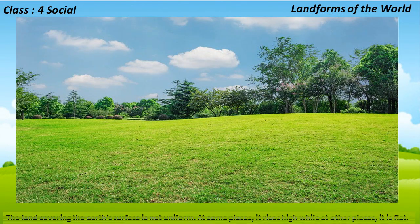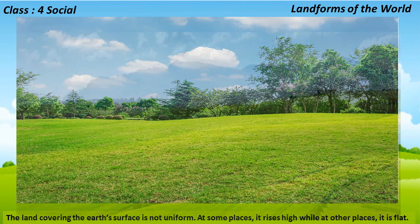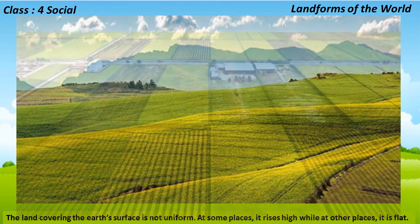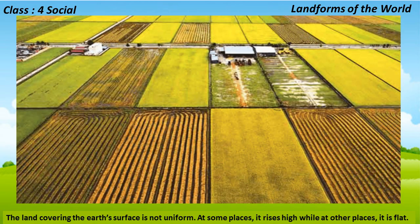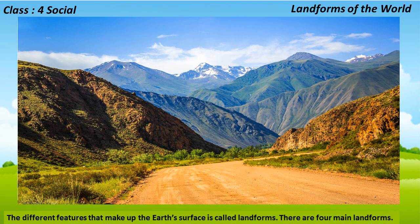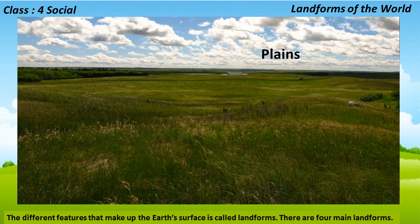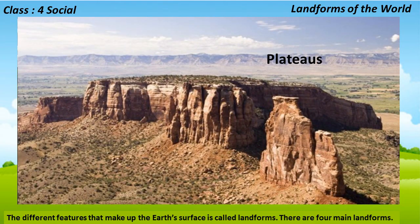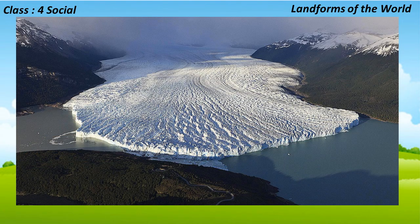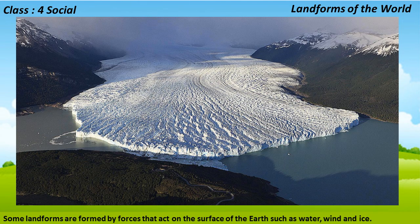The land covering the earth's surface is not uniform. In some places it rises high, while at other places it is flat. The different features that make up the earth's surface are called landforms. There are four main landforms: mountains, plains, plateaus, and deserts.